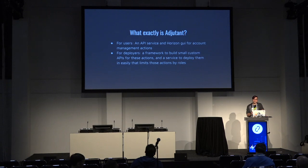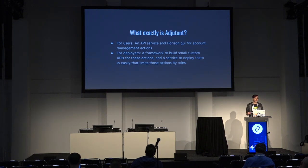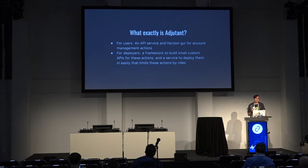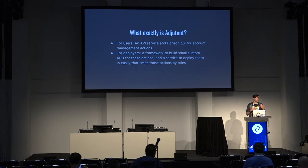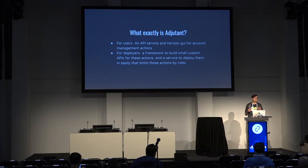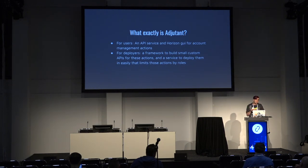Adjutant has a lot of APIs that just by themselves are quite useful — without any customizations, most clouds will probably end up running them. Which APIs you expose is entirely configurable. Maybe your cloud already has a password reset mechanism — you don't turn that feature on. Or maybe you have an LDAP-based or federated cloud so you don't want Adjutant handling roles — you turn that feature off. It's a service that lets you plug in what you need, and plugins let you build additional workflows yourself.